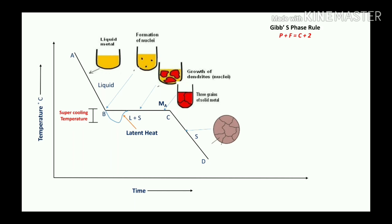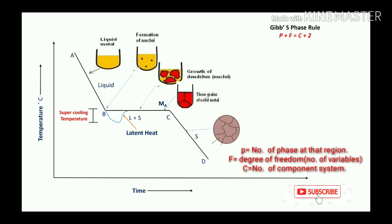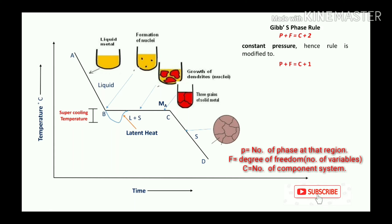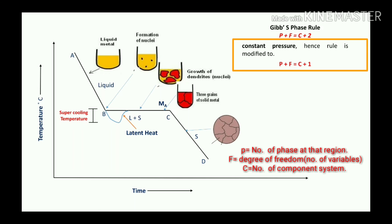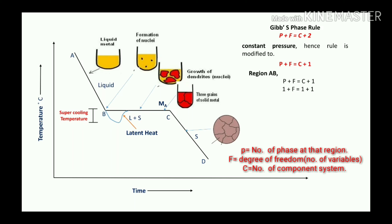This behavior is also proved by the Gibbs phase rule. Gibbs derived a relation of phase, degree of freedom, component, and systems: P + F = C + 2. In this case there are three variables — temperature, pressure, and composition — but since we are at constant pressure, the Gibbs rule is modified to P + F = C + 1.